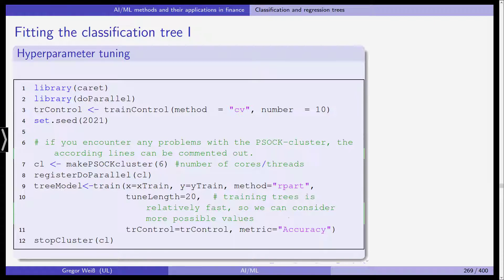TR control is what we set in line three, our option for using tenfold cross-validation to select the hyperparameter. The metric that is used for training is the accuracy. Then we stop the cluster in line 12.